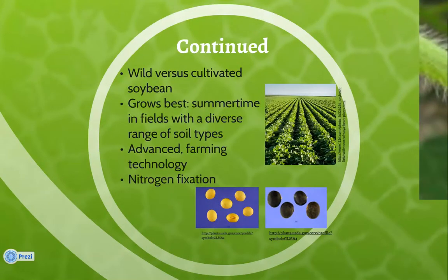The biggest difference between the wild soybean, Glycine Soja, and the cultivated soybean, Glycine Max, is seed size. The seeds of cultivated soybeans are about 9.4 times larger. Over time, people have selected for bigger seeds in pods because that is the part of the plant that is used the most.